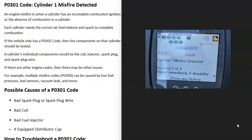Today I'm talking about a P0301 code, what it is and how you go about fixing it. So what is a P0301 code? Well, it's a cylinder one misfire detected.